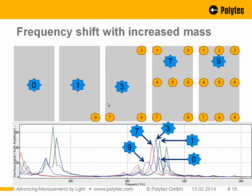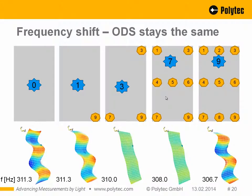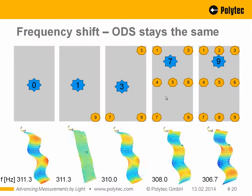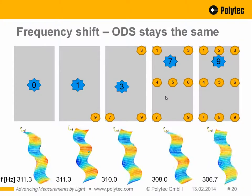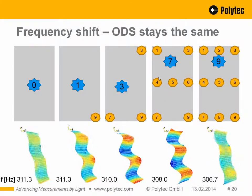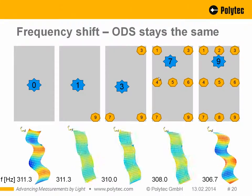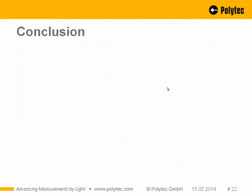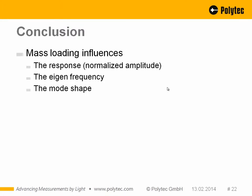The deflection shapes look somewhat different but not so different that you can clearly identify mass loading visually. There is a certain phase shift but not a dramatic difference in the deflection shape itself, which makes the problem worse: you would identify these deflection shapes as a freely vibrating plate, when in fact the vibration is influenced by the added mass. In conclusion, mass loading influences the response, the eigenfrequency, and the mode shape — it is no longer free vibration.